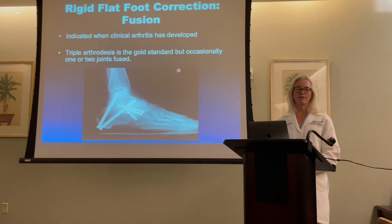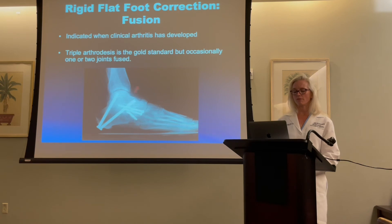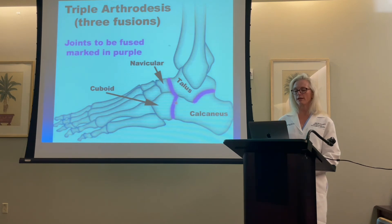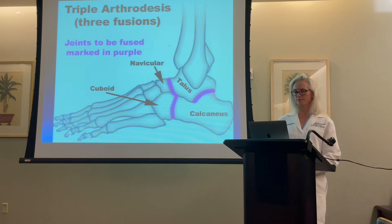If, however, you've developed arthritis, then you need to do something called a triple arthrodesis or fusion, and this fuses three joints: the talonavicular joint, the calcaneocuboid joint, and the subtalar joint, and this reconstructs the arch.